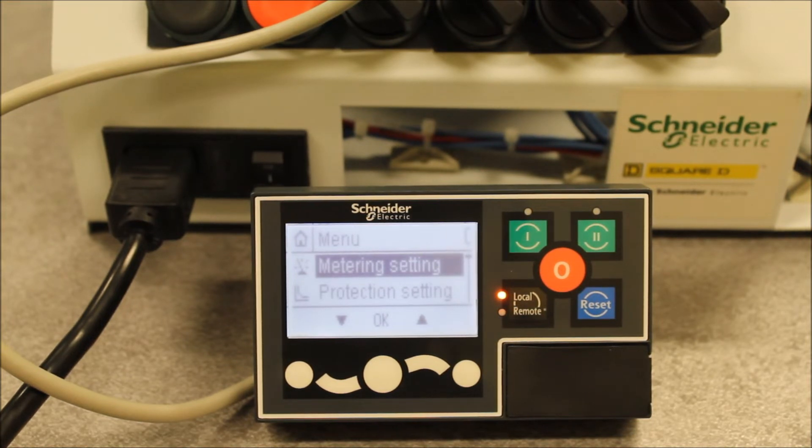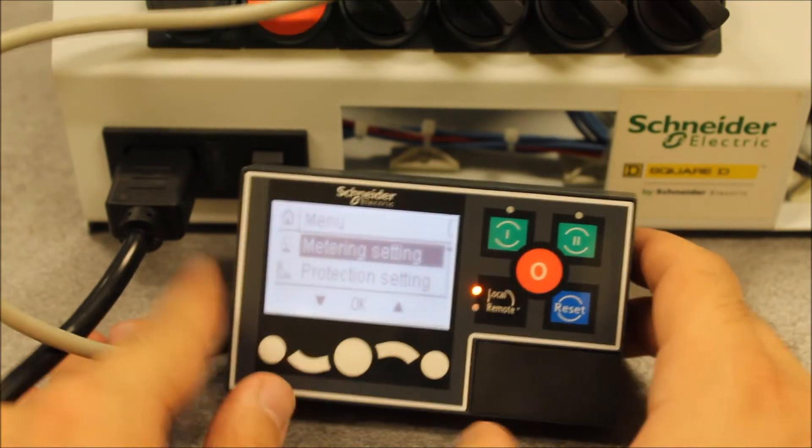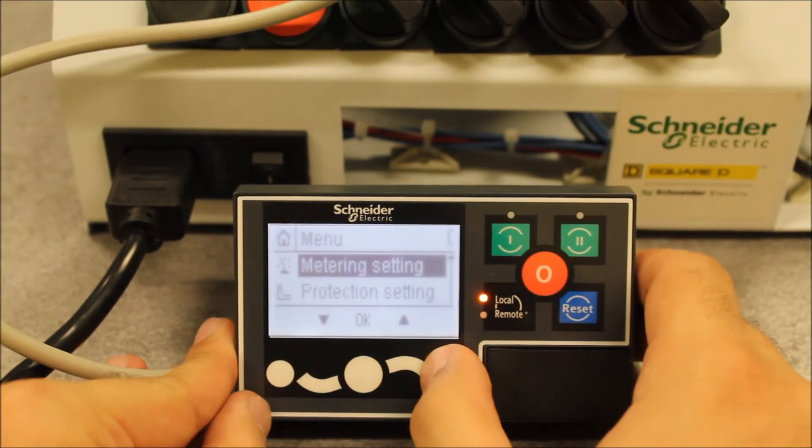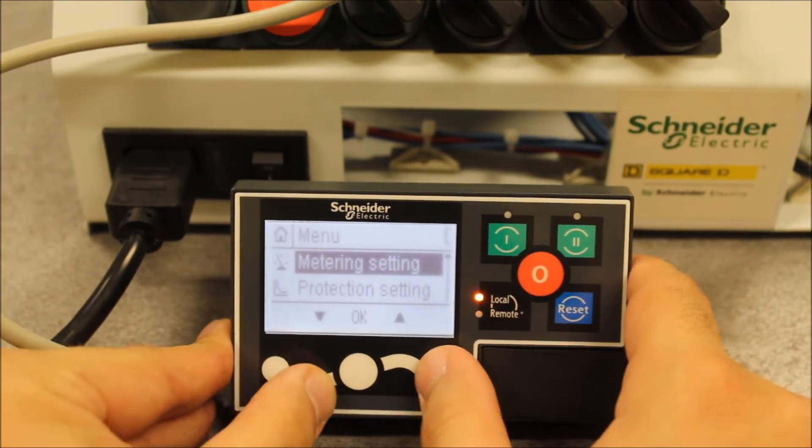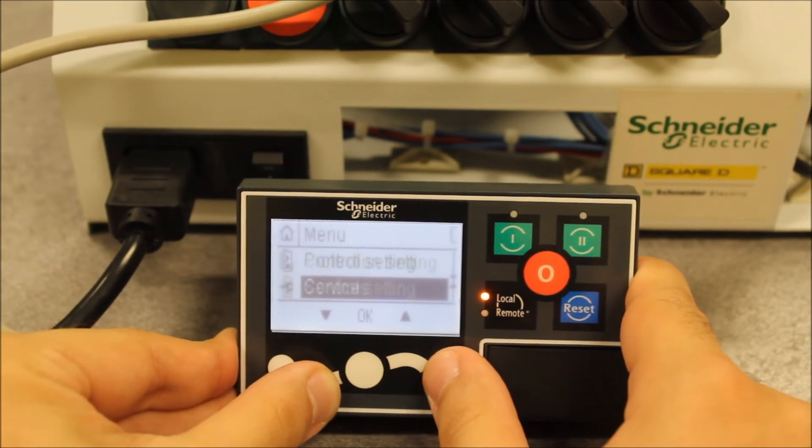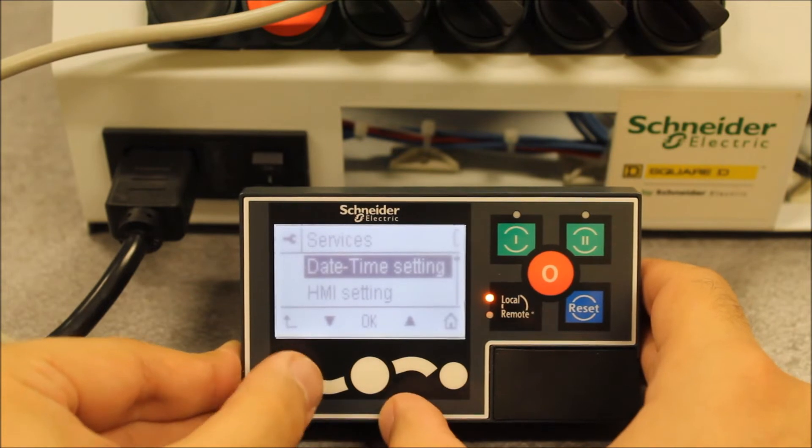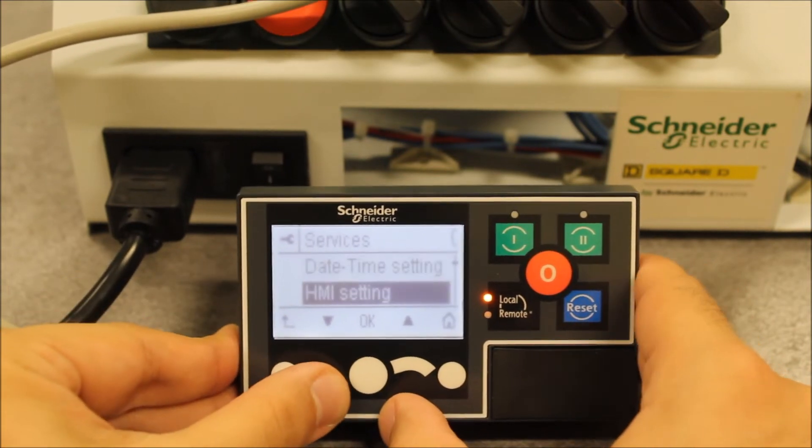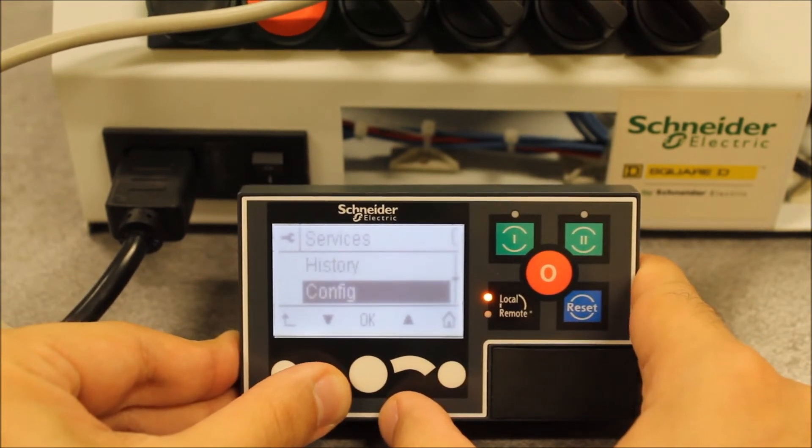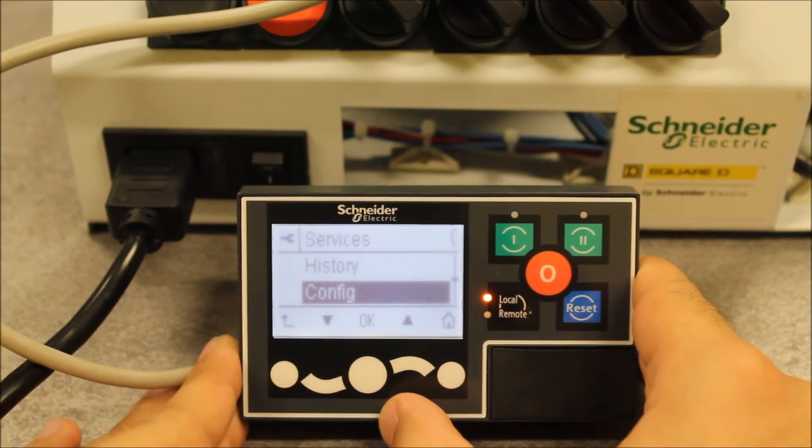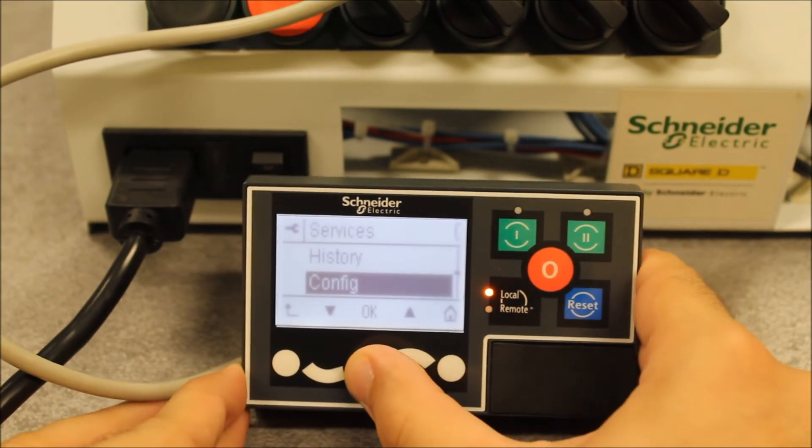So to get rid of this, from the main display here to navigate the menu structure, you want to arrow down and go down to services, and then enter. Then you want to scroll down into configuration and enter on that.